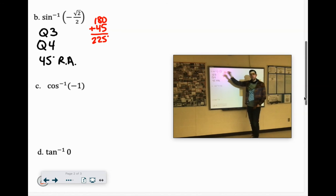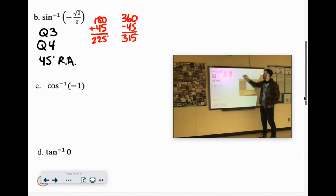For quadrant 4, that would be the bottom right. We do 360 minus 45, which gives us 315 degrees. So those are our two angles.